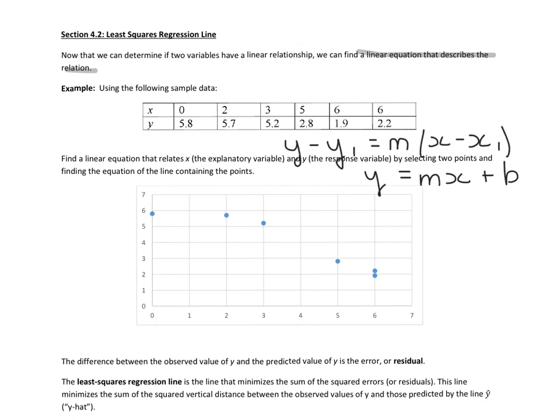We could come in and draw a line that would model the data, and there's infinitely many lines. For instance, we could look at this line. Maybe we think this line is a better model. Maybe we think this line is the best model. We can even choose two ordered pairs, maybe the first and the last one, and say that green line is the best linear equation to model the data. So since there are infinitely many lines, the question is, which one is going to be the best line?